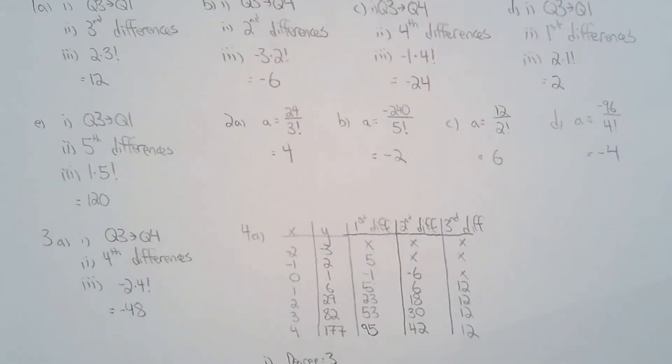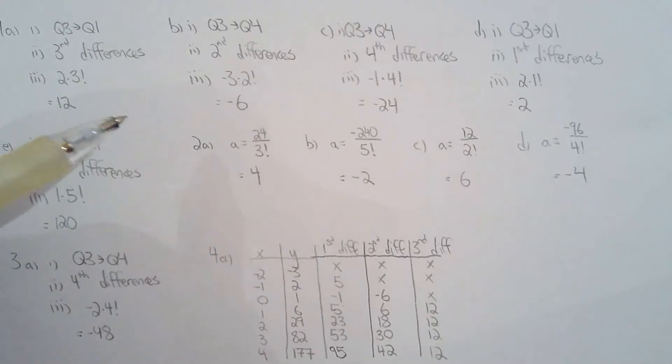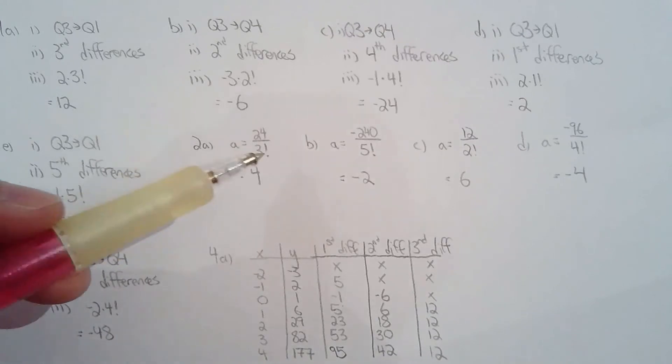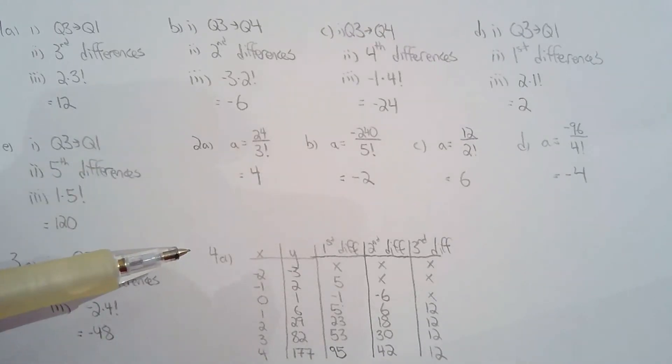For question 2, they gave me the nth difference and asked me to solve for the leading coefficient. I just have to divide by n factorial. Basically, it's a rearrangement of the formula—divide by n factorial and I will have the leading coefficient.